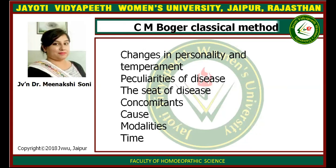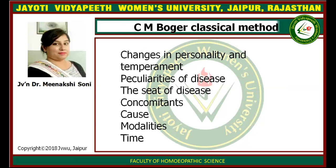The next method is by Dr. C.M. Boger. C.M. Boger gave seven points: changes in personality and temperament, peculiarities of the disease, seat of the disease, concomitant, cause, modality, and time. If you cover these seven points, you can follow C.M. Boger's classical method and select a single, similar medicine with the help of the classical repertory BBCR.